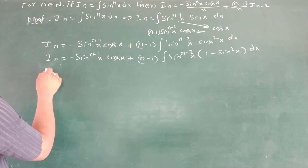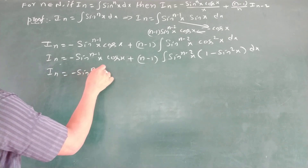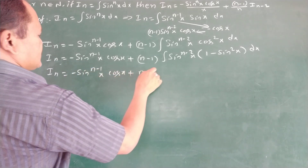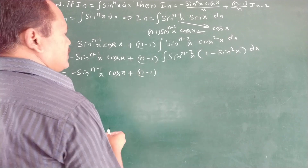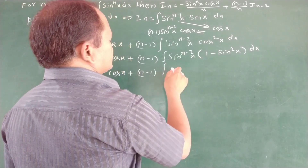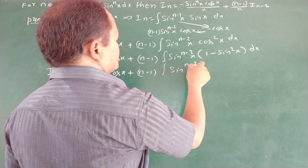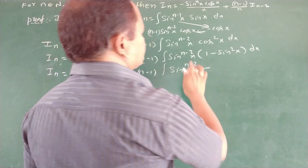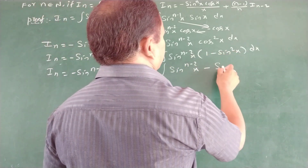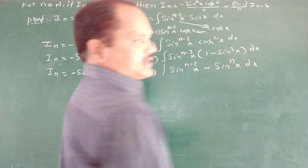Now Iₙ equals minus sinⁿ⁻¹x times cos x plus (n minus 1) times the integral of sinⁿ⁻²x minus sinⁿx dx. Here, the exponents combine: n minus 2 plus 2 gives sinⁿx dx.